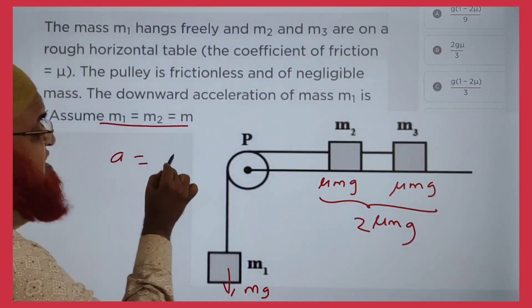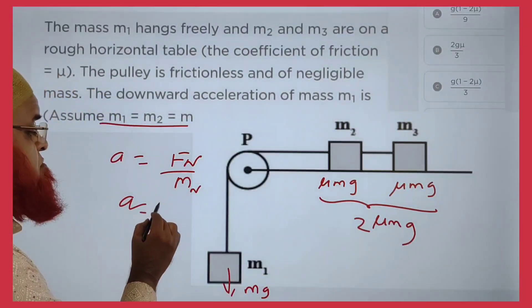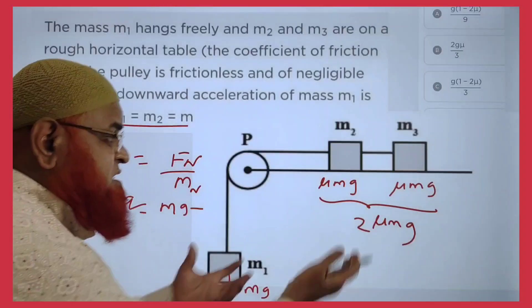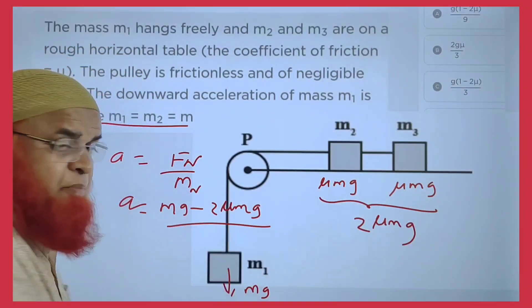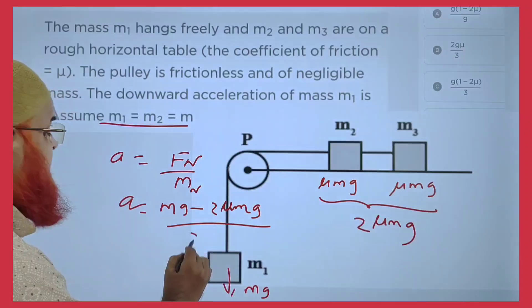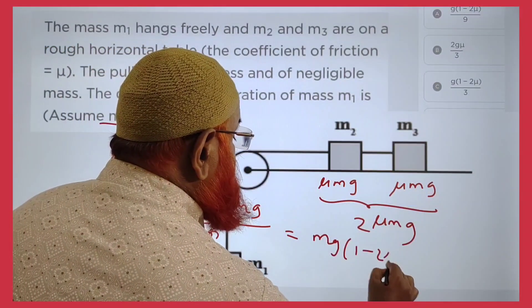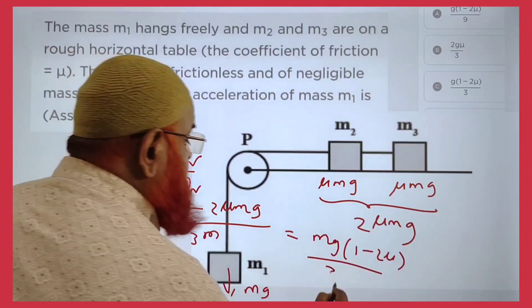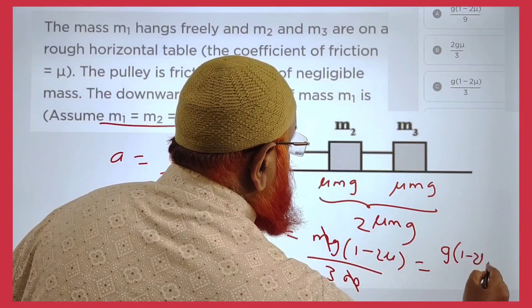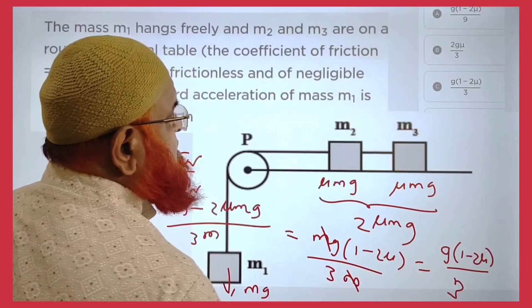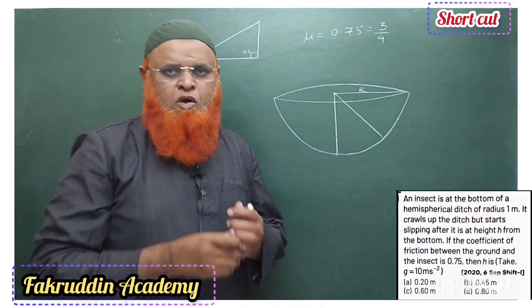Acceleration is net force divided by net mass. The applied force is mg and the friction force is 2μmg. Dividing by net mass (sum of all three masses = 3m), and factoring out mg, we get acceleration = g(1-2μ)/3. So option C is the correct answer.